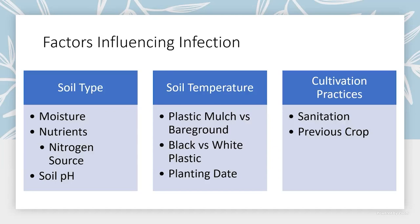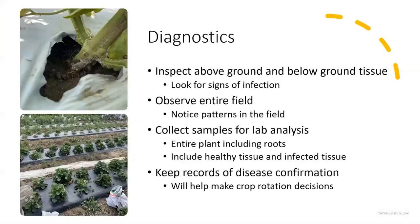Planting date goes hand in hand with soil temperature — waiting too late gets you into soil temperatures that are too hot. Cultivation practices and sanitation matter: are you keeping your field clean, removing old plant debris? And what was your previous crop? Crop rotation is very important when dealing with soil pathogens. Soil-borne diseases are pretty hard to diagnose in the field unless you have telltale characteristics like southern blight or damping off — otherwise we really rely on the plant diagnostics lab.